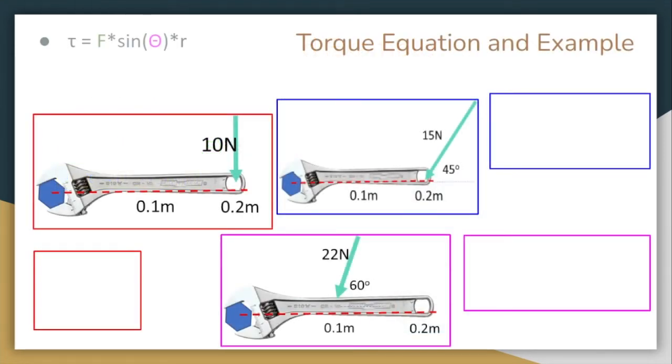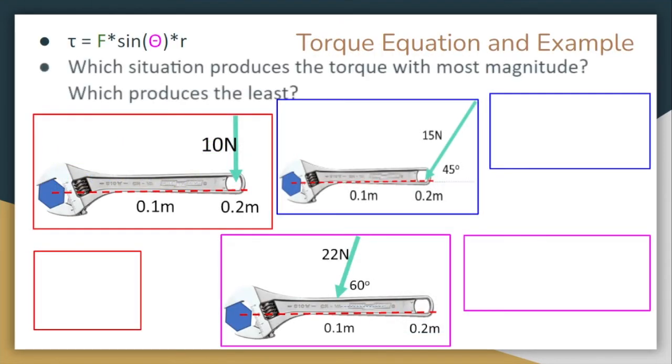Now let's compare three different scenarios. We have our equation above. So let's take a look at these situations below and figure out which one produces the torque with most magnitude and which produces the least. So let's start with the red box there. If we look at our first example here, we know that we're going to use our torque equation. And since it's 90 degrees, we can just ignore sine of theta. If we plug in our values, we have our force, which is 10 newtons and the radius or the distance from the pivot point, which is 0.2 meters. So just multiplying those two together, we find out that the torque should be 2 newton meters. Not too bad.